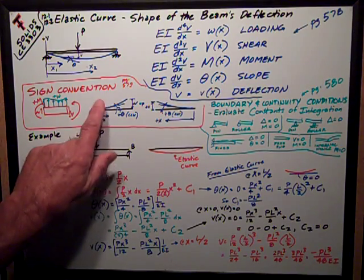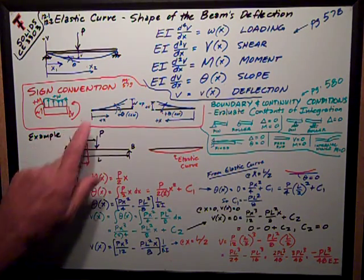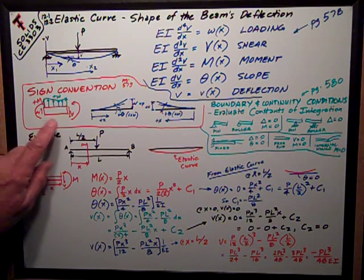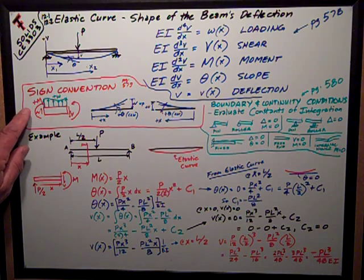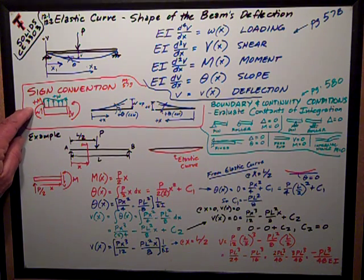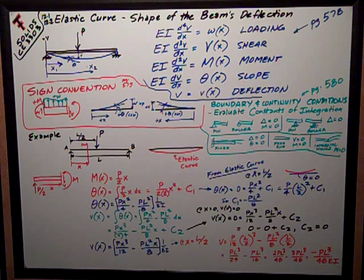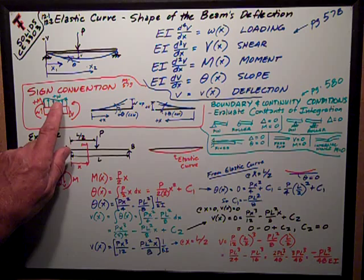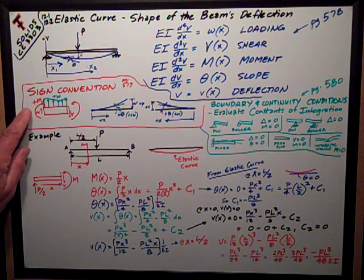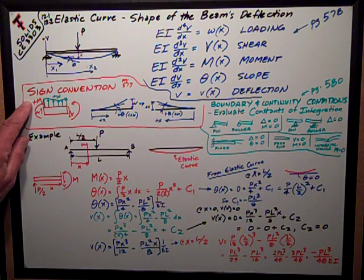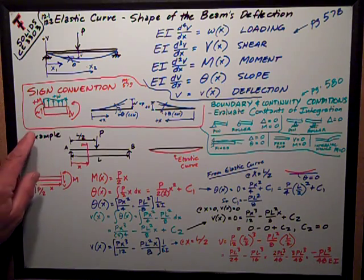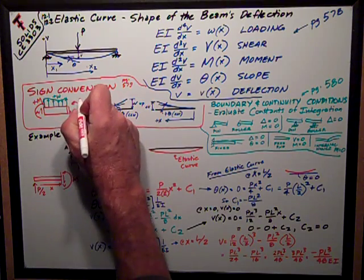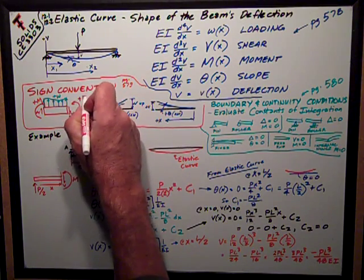Now on page 579, we need to extend our sign conventions. Remember from the moment diagrams and moment equations and shear equations, we were given this sign convention that's consistent with everything else we're doing. For a segment of a beam, positive loading is up. Positive moment on the left side of the beam is clockwise. Positive moment on the right side of the beam is counterclockwise.